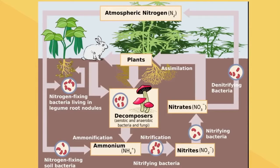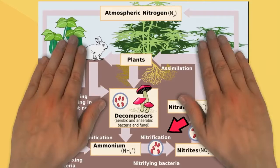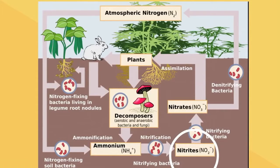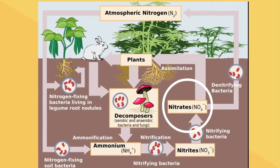Ammonia is toxic, so additional bacteria combines this ammonia with oxygen in a process called nitrification. At this point, the nitrogen is in a form called nitrite. Additional nitrifying bacteria then convert this nitrite to nitrate. At this point, plants can absorb this nitrogen in a process called assimilation.